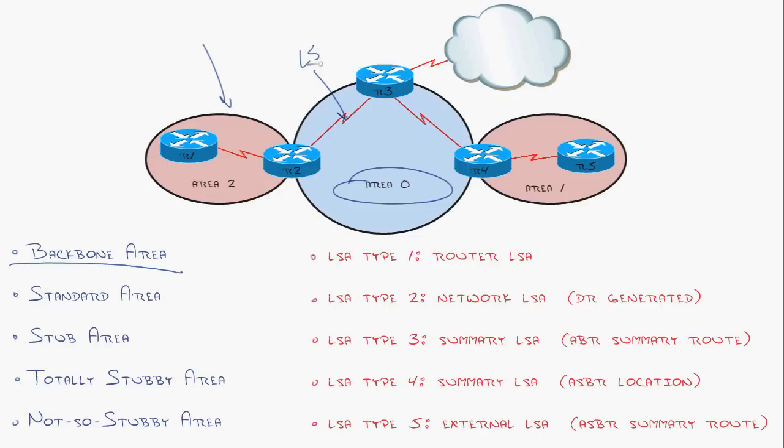In link state protocol, which OSPF is one, the rule is that all routers in the area have to have the same link state database, they have to know about everything. So the only way to hide some routes or to do summarization, a big routing efficiency mechanism, is to break into multiple areas. That is where the standard areas come in.